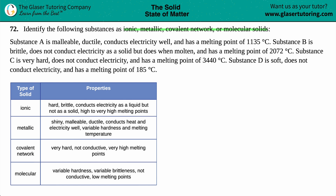Substance A is malleable, ductile, conducts electricity well, and has a melting point of 1,135 degrees Celsius. So since they go on to substance B after this, let's first find out what substance A is.